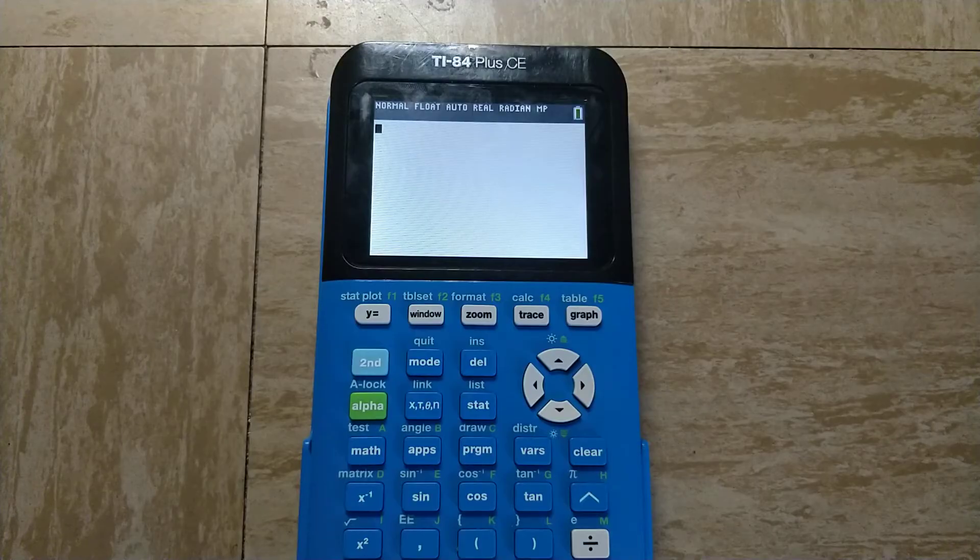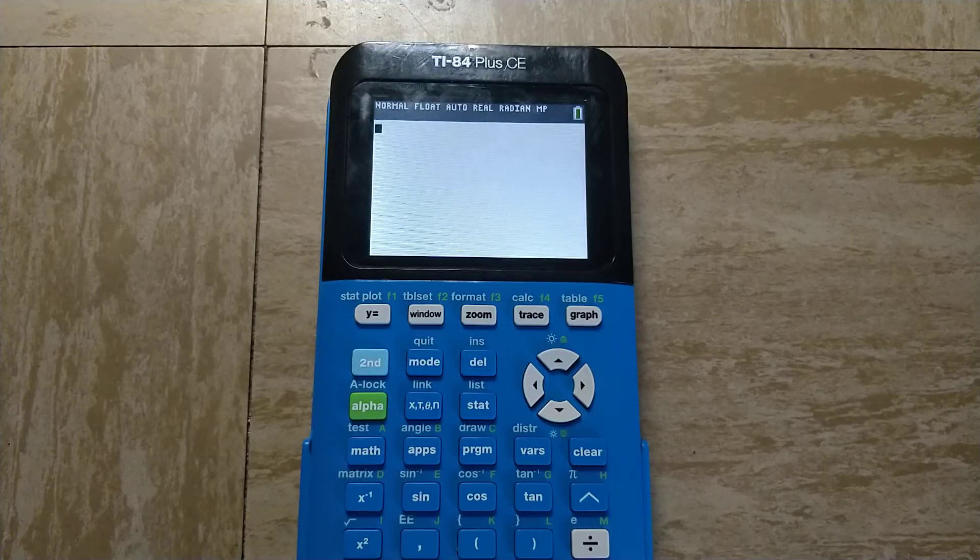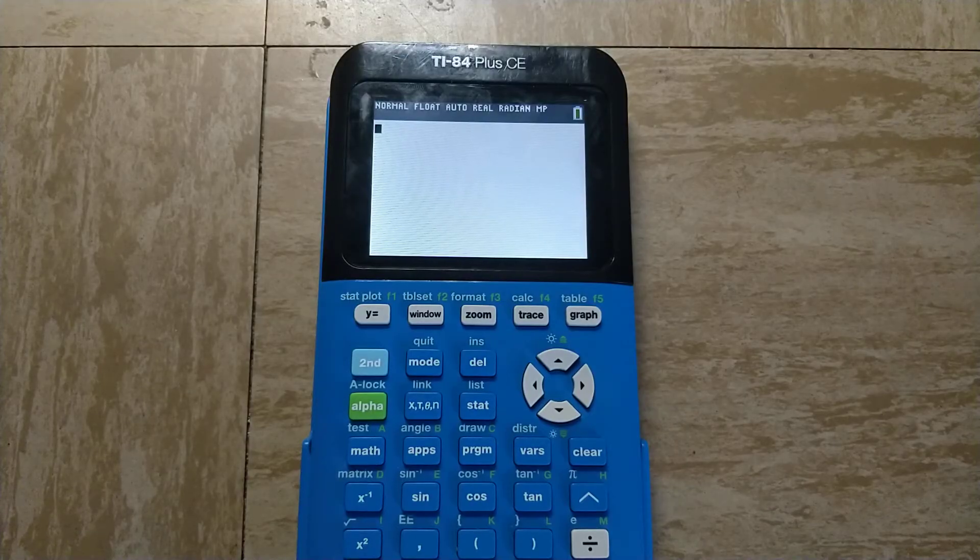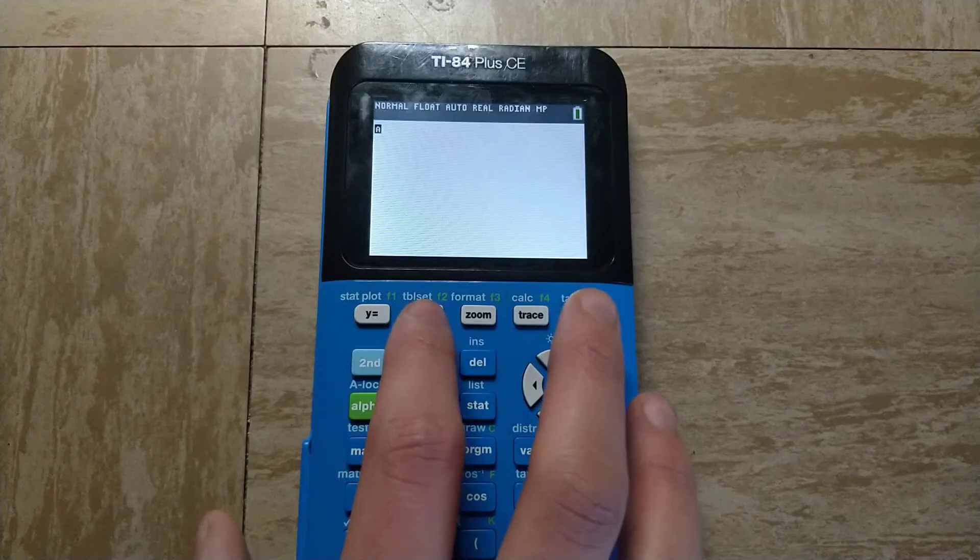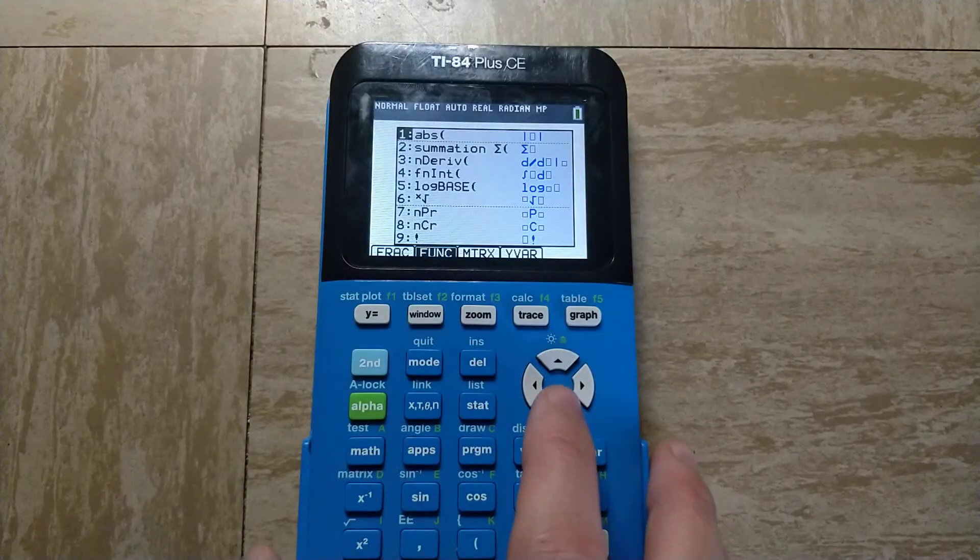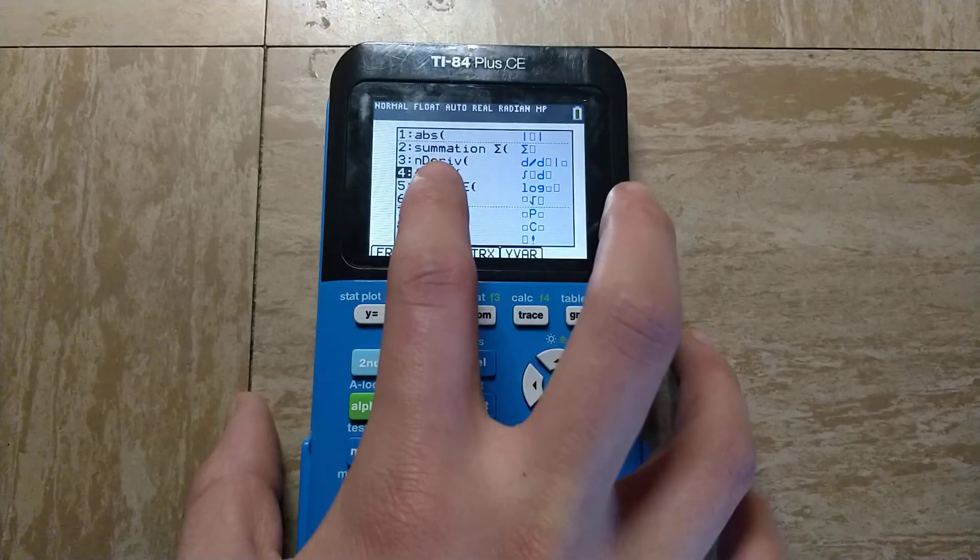So for example, if I wanted to calculate the definite integral of 2x squared plus 3 from x equals 0 to x equals 6, I would do that by pressing alpha, and then F2 which is window, and then scrolling down to the fourth option here, which is the integral.